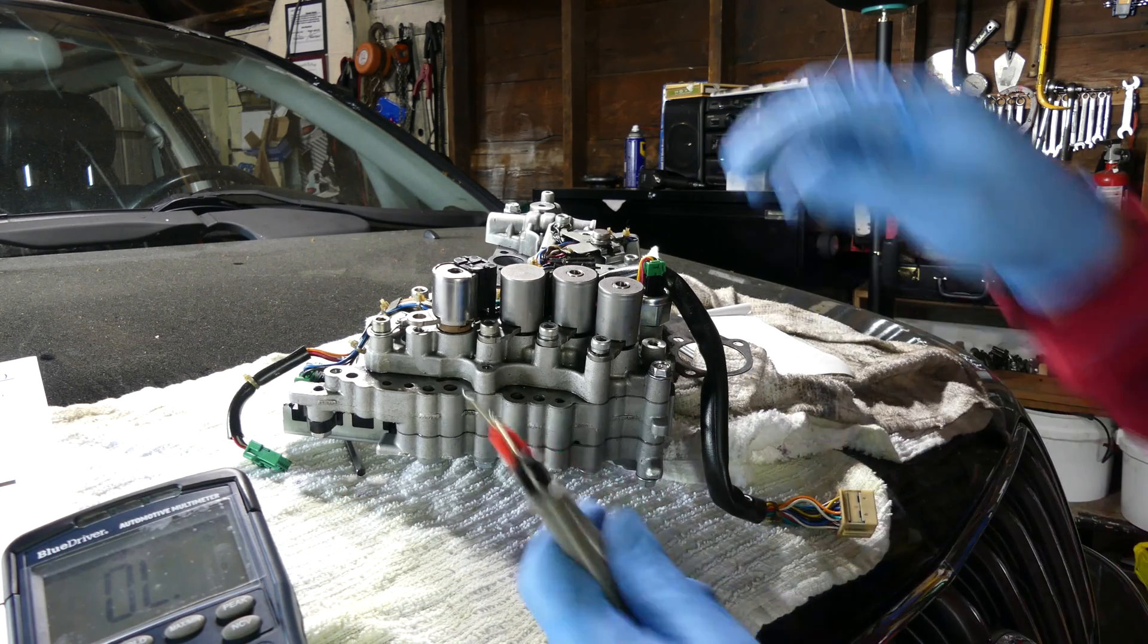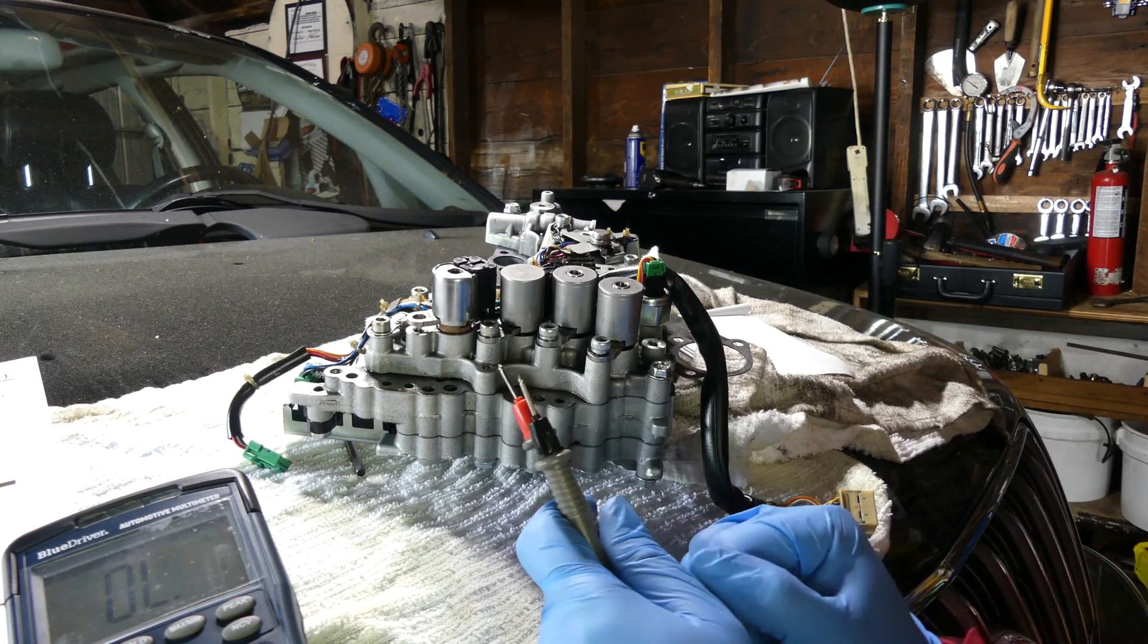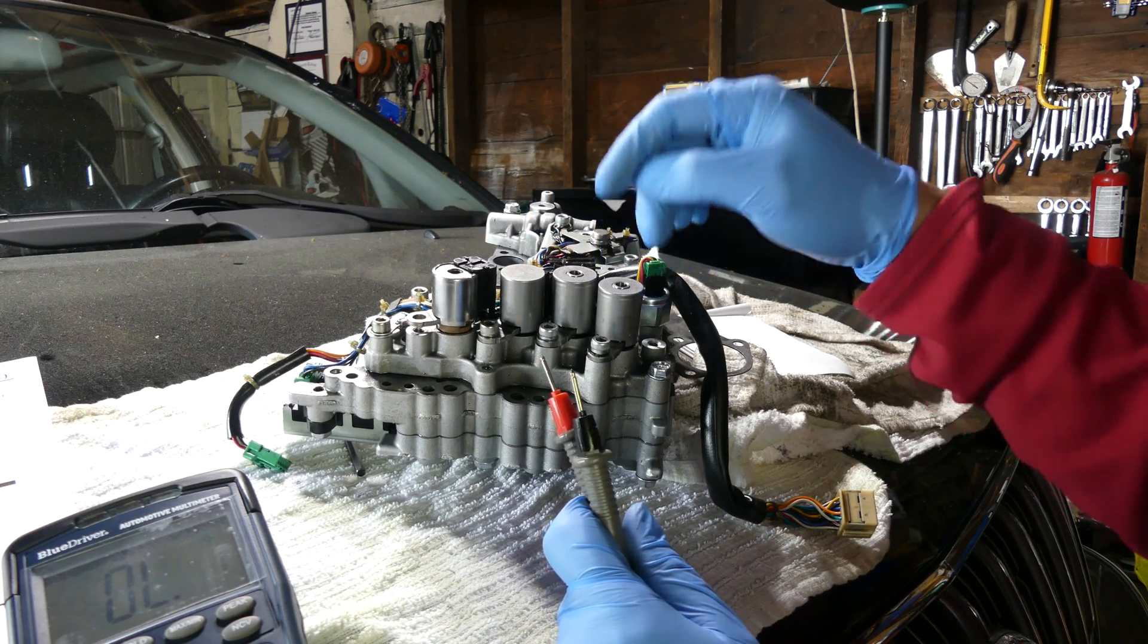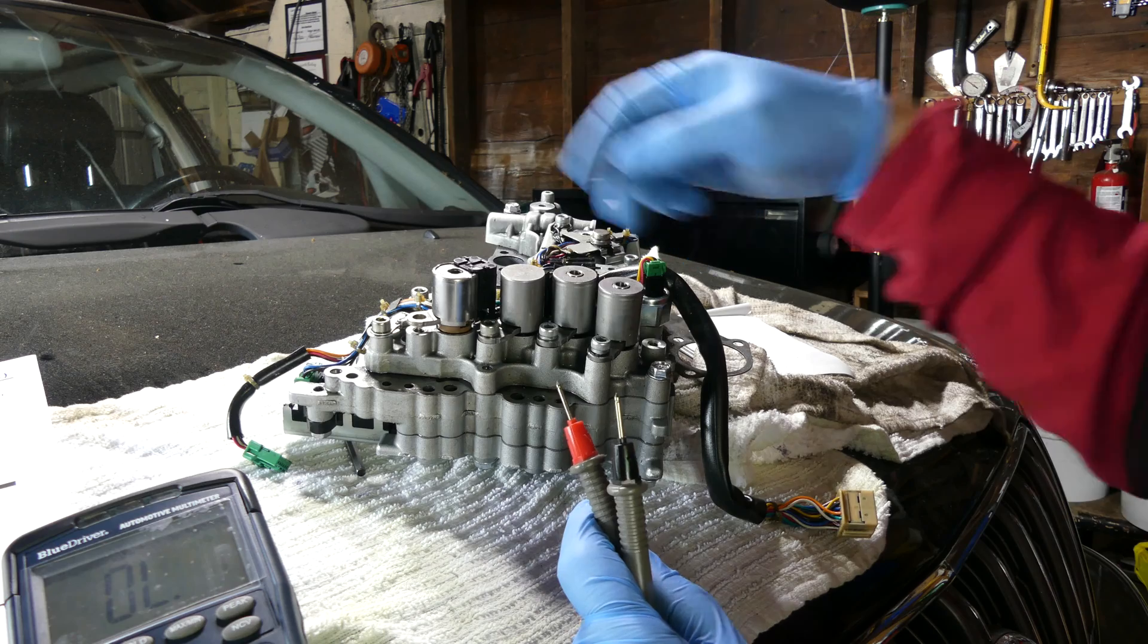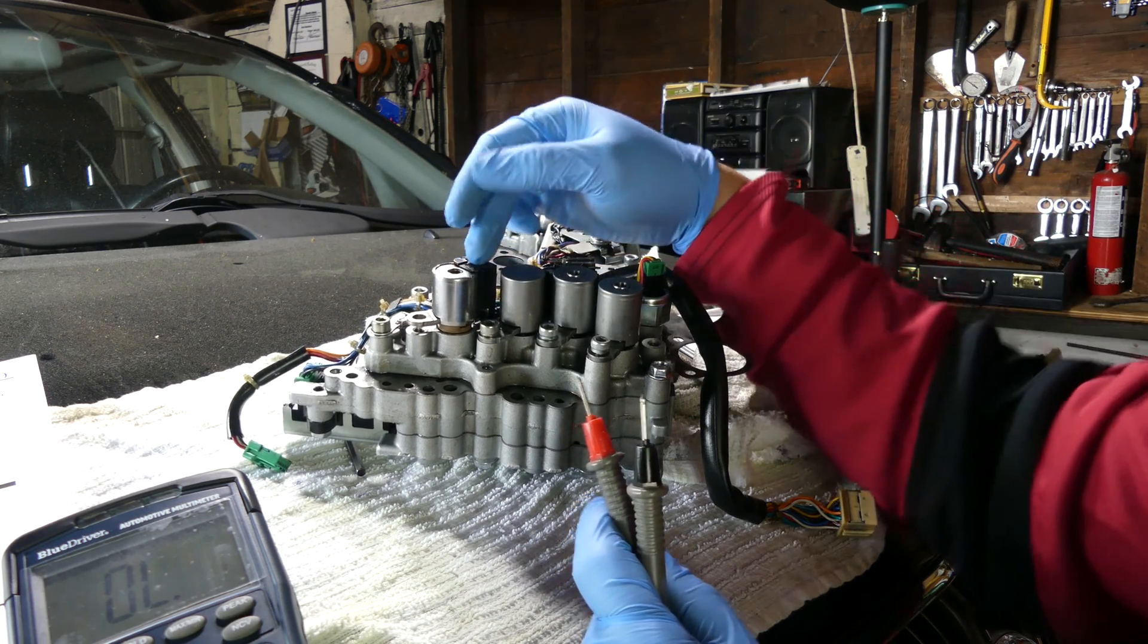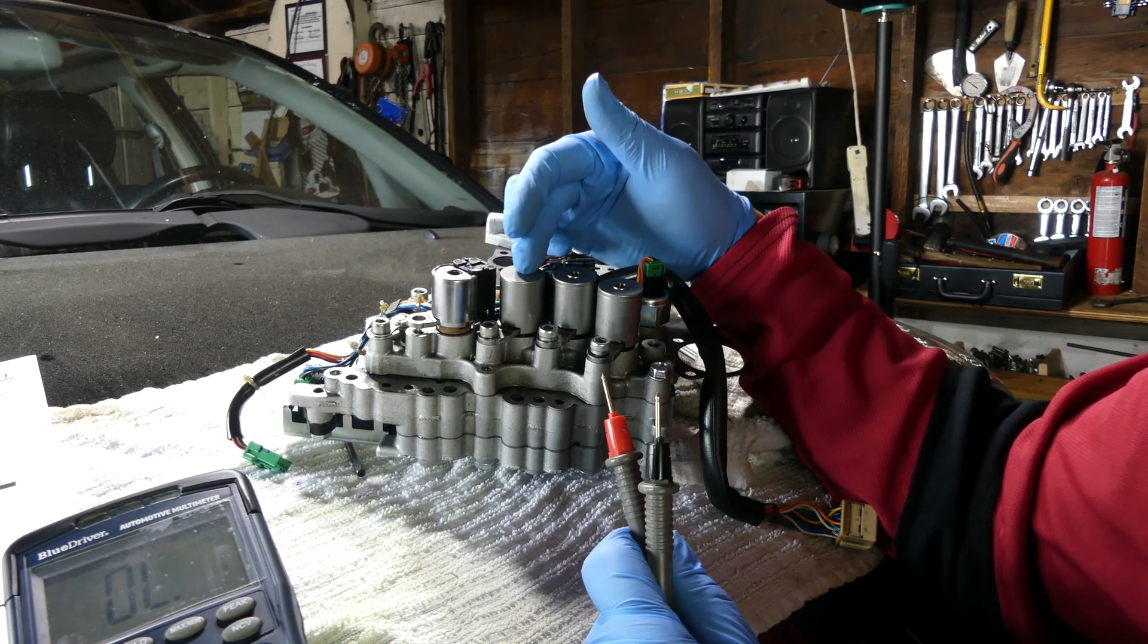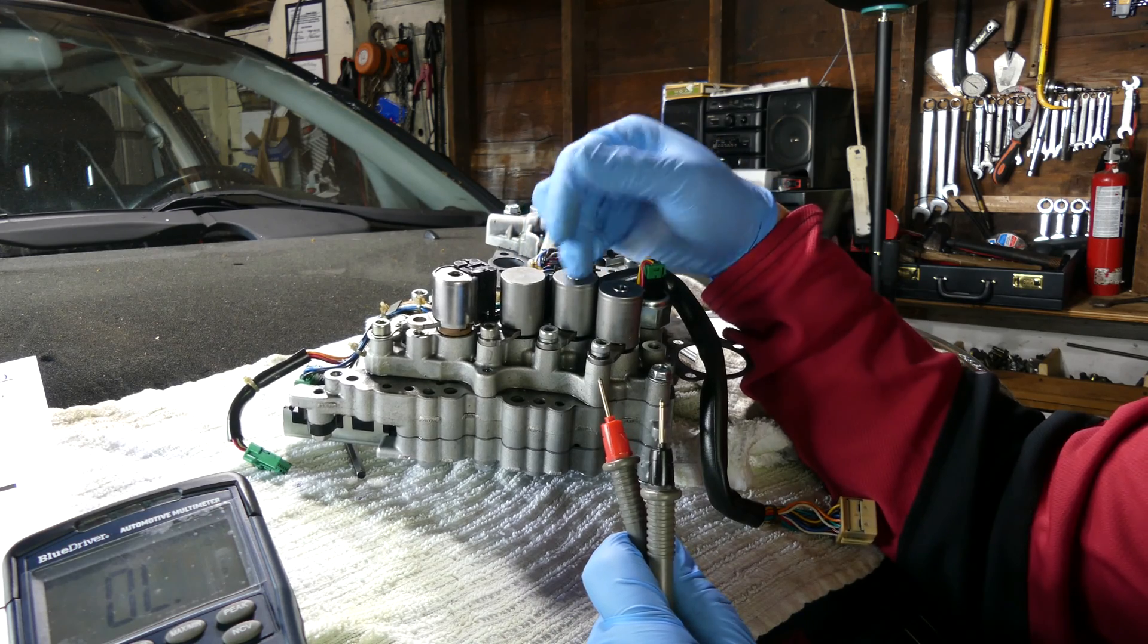Now we will be checking this one. I'm gonna just say this is A, B, C, D. So this is solenoid A, B, C and D. But actually this is like the primary solenoid, and this is the secondary, and this is for the TCC or the torque converter.